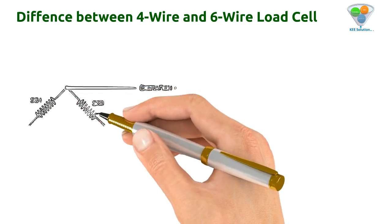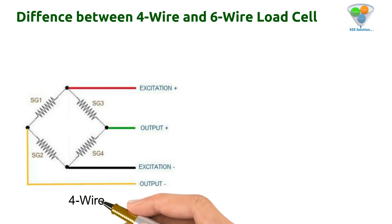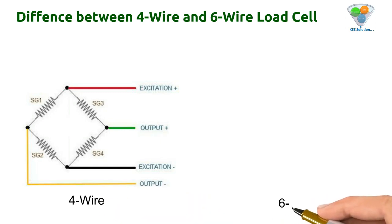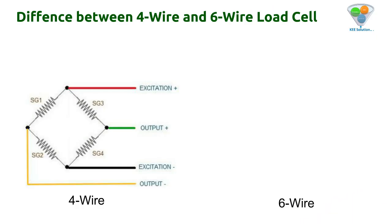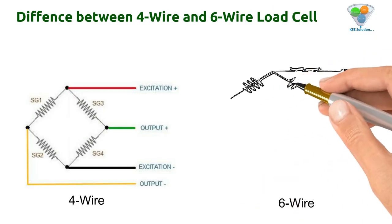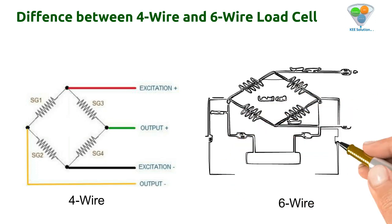The difference between a four-wire and six-wire load cell: in the four-wire bridge, SG1, 2, 3, 4 are the strain gauges. Excitation positive and negative are taken from the upper and lower ends of the bridge, and the output is taken from the sides. For the six-wire, the same four strain gauges are used but with two additional sensing signals in parallel with excitation.